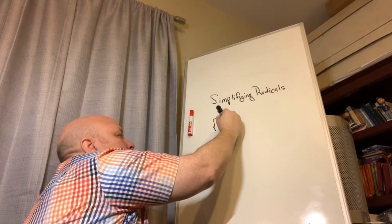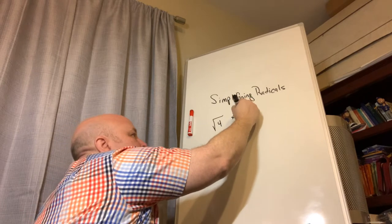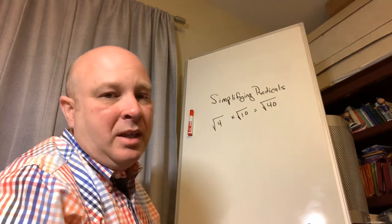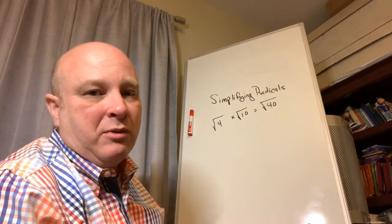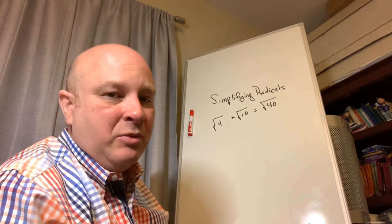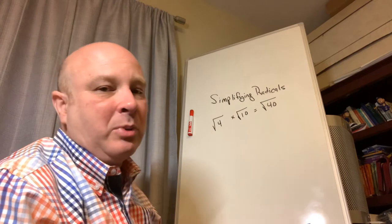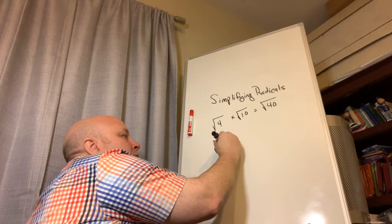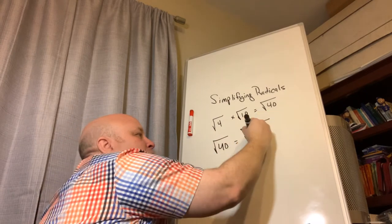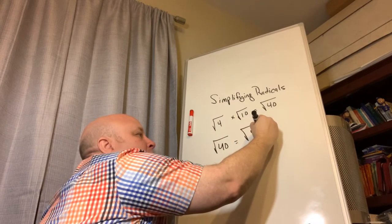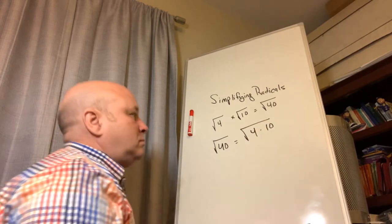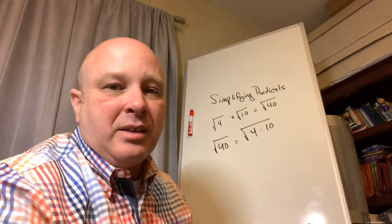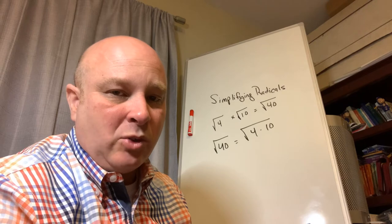The square root of 4 times the square root of 10 equals the square root of 40. You can do this with multiplication — you can't do it with addition and subtraction, but you can with multiplication. That means if I'm given the square root of 40, I can break it apart as the square root of 4 times 10.